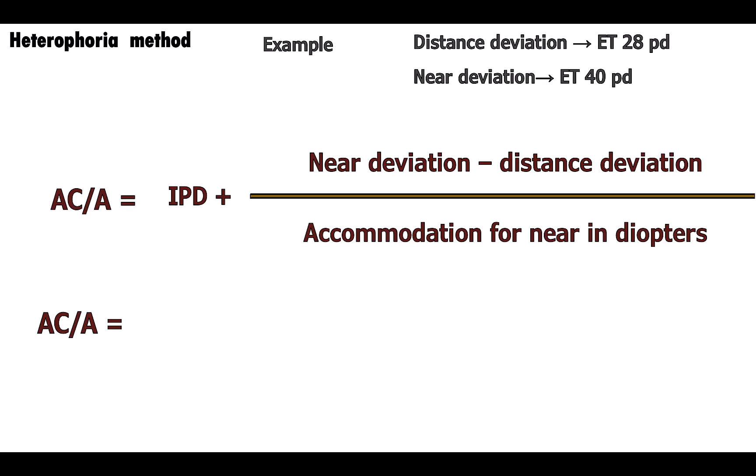Substituting in the formula: 6 for IPD, near deviation is plus 40 prism diopters, distance deviation is plus 28 prism diopters (plus values for both as both are esotropic), divided by accommodation for near in diopters. Near is taken as 33 centimeters, so the accommodation required is 100 divided by 33, which equals 3.